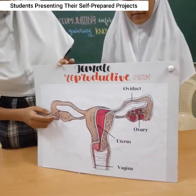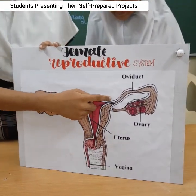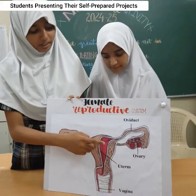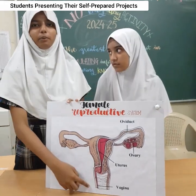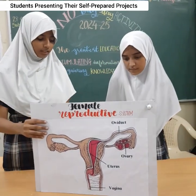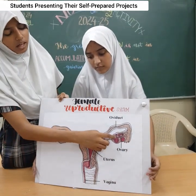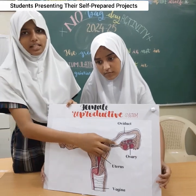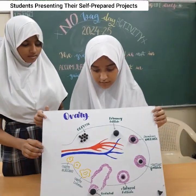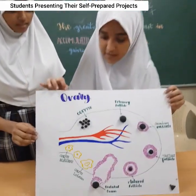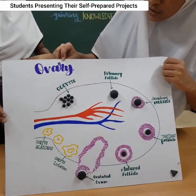The female reproductive system contains an ovary, oviduct (also known as the Fallopian tube), uterus, and vagina. During puberty, changes occur in the ovaries. This diagram represents the diagram of the ovaries.